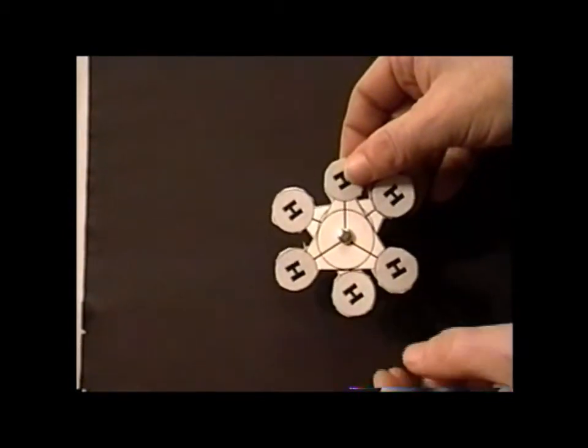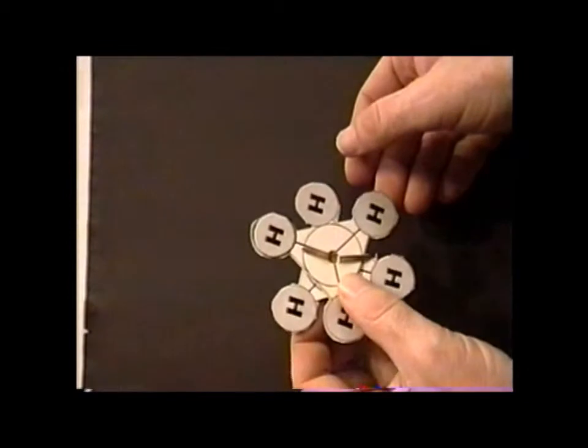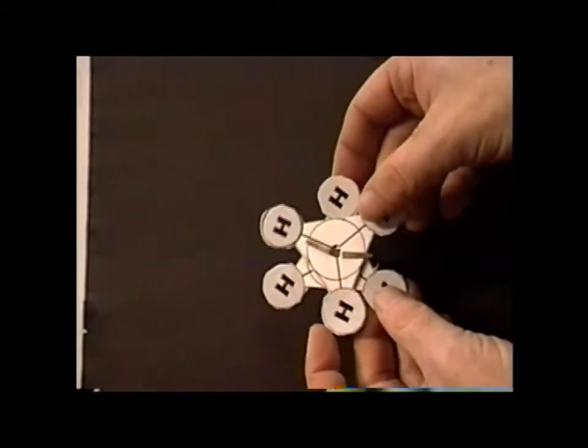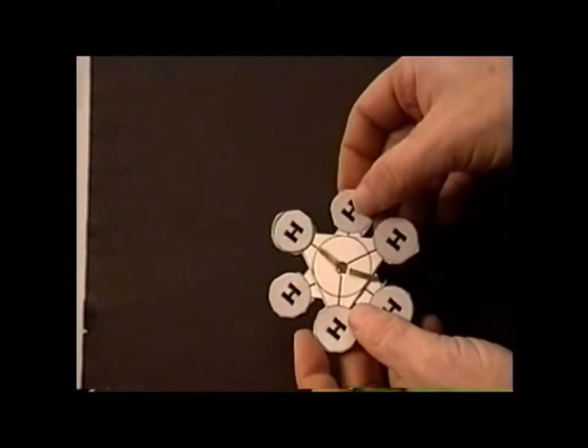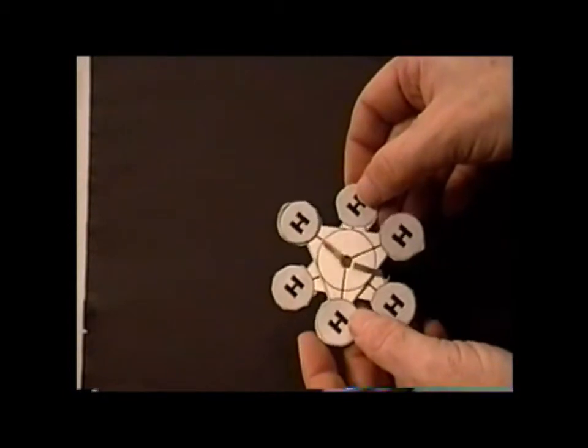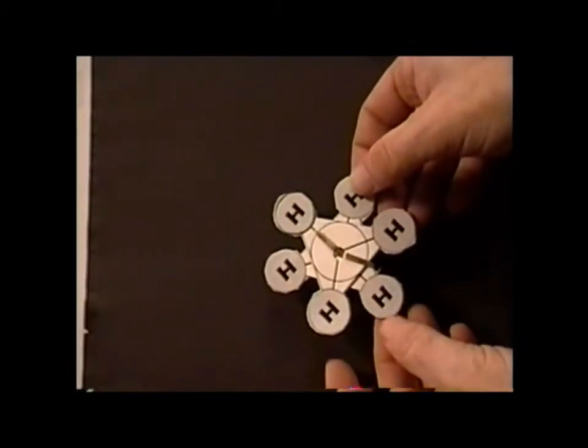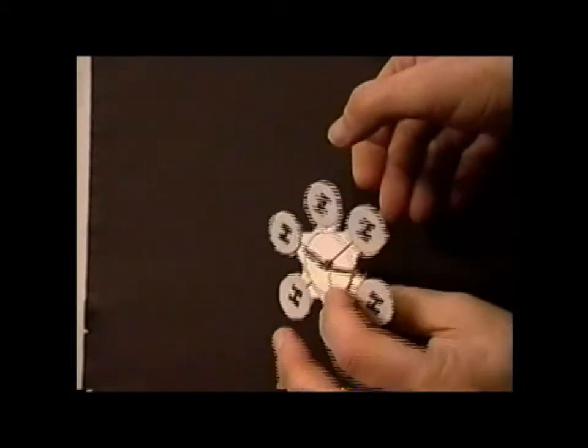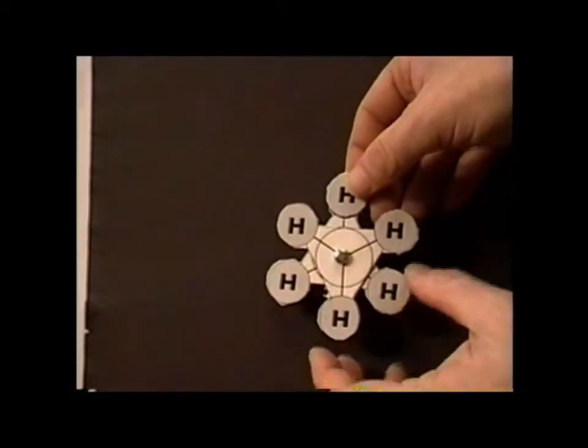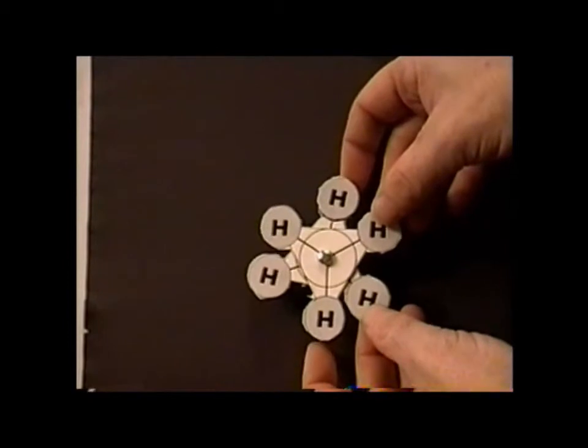There is actually a second advantage in that we can simply flip the model over, and we can look at it from the back side. So, in some cases, we may be more comfortable viewing the substituents from one particular direction or the other, and we are free to simply turn the model over and look at it from the back side if we like.